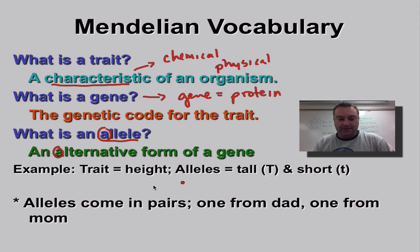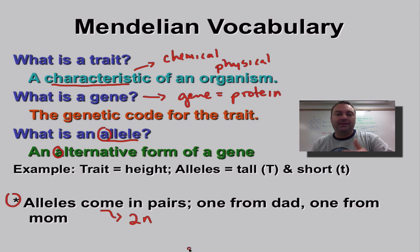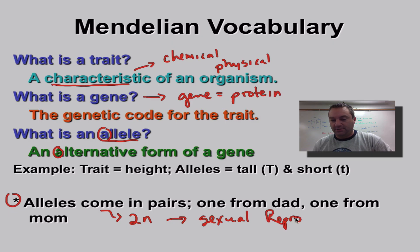Alleles come in pairs because most organisms are diploid. In other words, they got one allele from dad and one allele from mom, so they come in pairs — they have two. That's because they're diploid, and you get diploid from sexual reproduction. Without sexual reproduction, none of this is going to make sense.